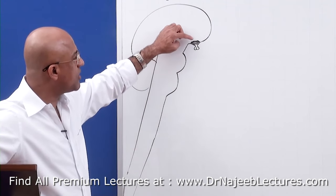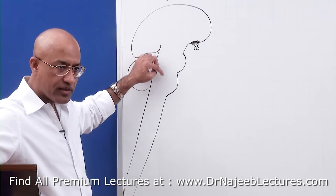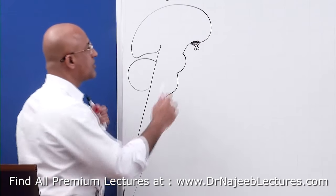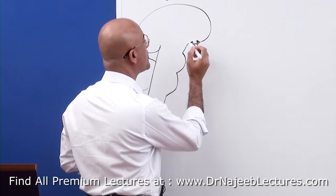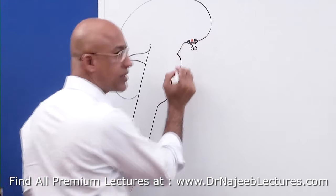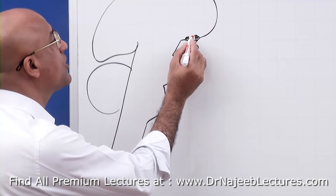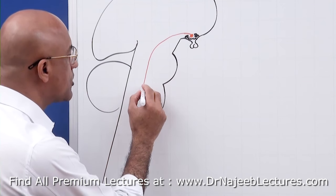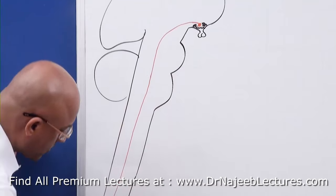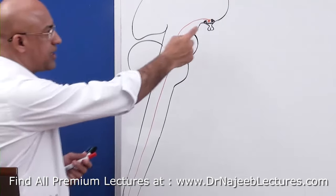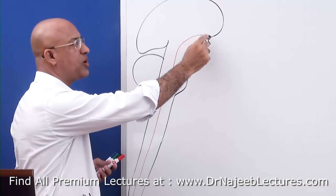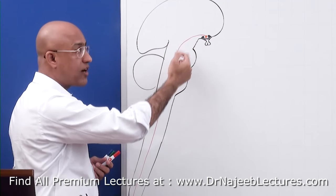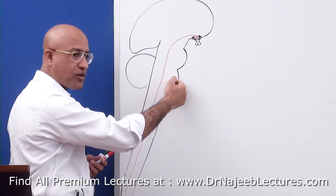Sympathetic downflow starts from the hypothalamus. Neurons with cell bodies residing in the hypothalamus send their axons downward, carrying sympathetic stimulation. This is a polysynaptic pathway that passes through the lateral part of the brain stem — the lateral part of the midbrain, lateral part of the pons, and lateral part of the medulla.